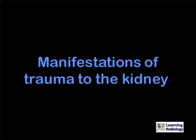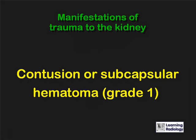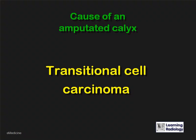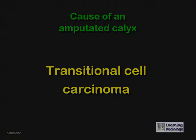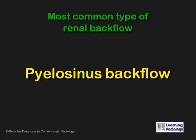What are the most common manifestations of trauma to the kidney? Contusion or subcapsular hematoma. What is the most common cause of an amputated calyx? A transitional cell carcinoma. What is the most common type of renal backflow? Pyelosinus backflow.